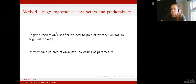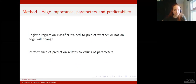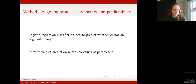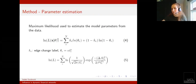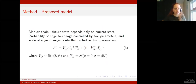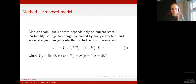An interesting thing about the parameters of the model is that they tell us about whether or not we would expect subsequent changes to be predictable from the value of LE. For instance, if we have a high value of the parameter rho, we would expect that LE would give us more of an idea of whether or not an edge will change.